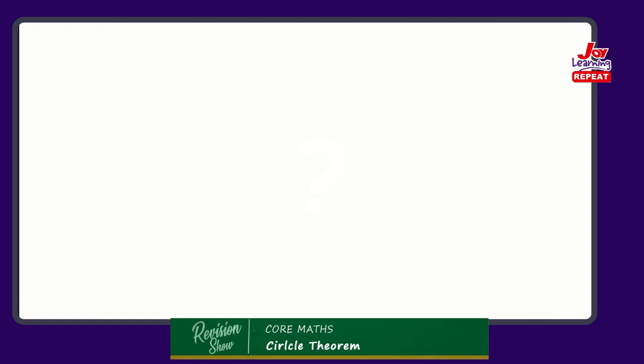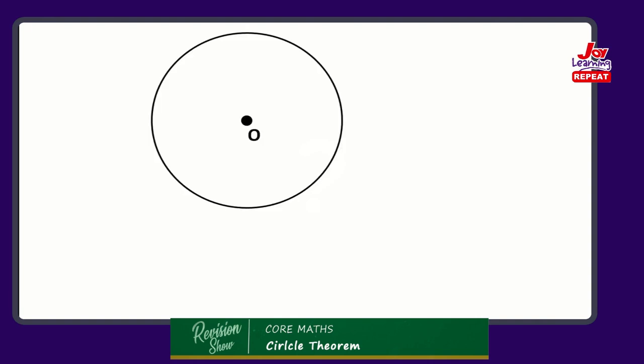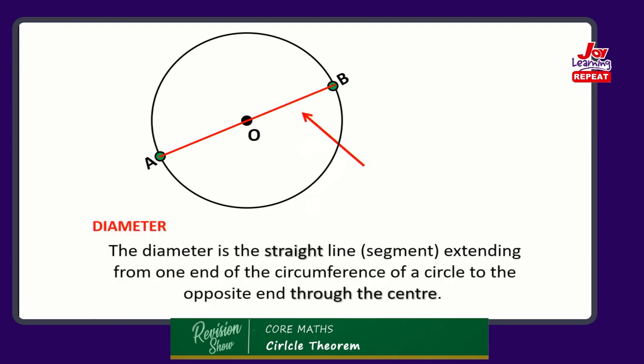The diameter. We normally say the diameter is twice the radius - technically that is right, but for a more appropriate definition: if we have a point A and another point B on the circumference, and a line joins A to B through O, then we have a diameter. A diameter must go through the center of the circle from one end, say A, to an opposite end B.